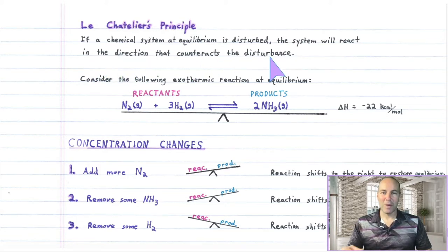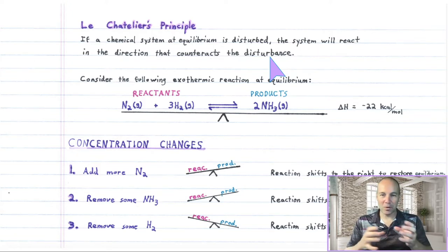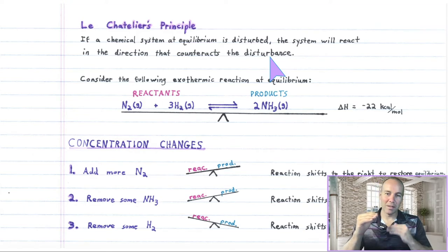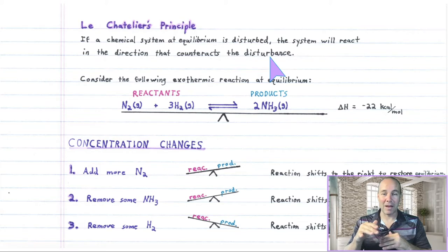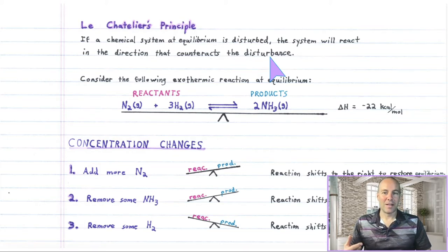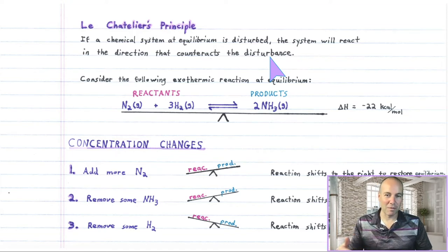So when you add extra chemical to the reaction mixture, that moves it away from equilibrium — the product to reactant proportions are messed up now. And the system reacts to get back to equilibrium. It shifts; it reacts in a certain direction to get back there.